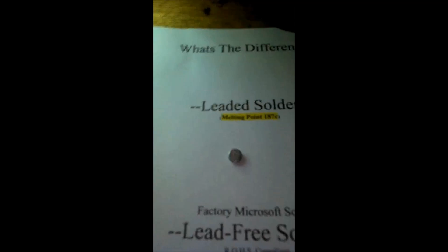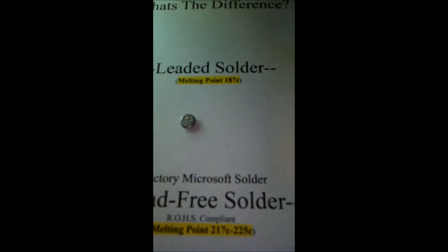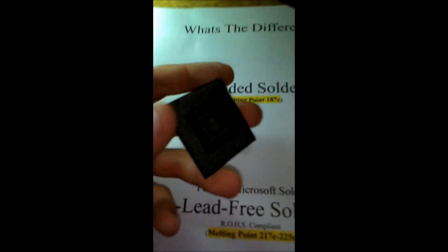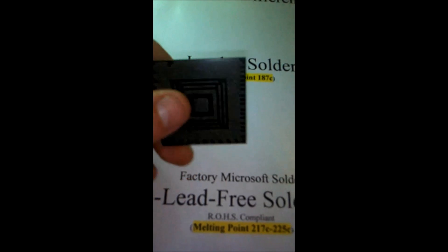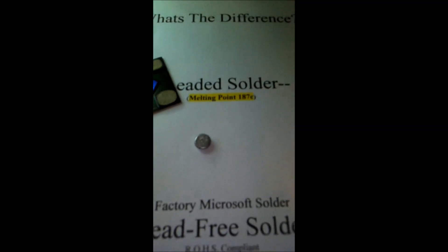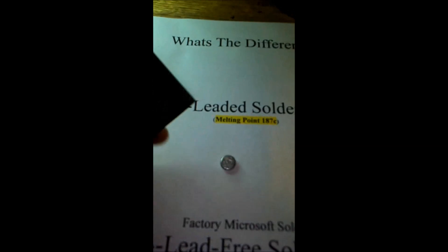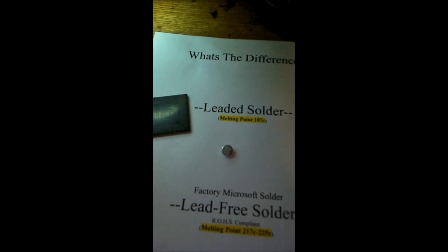What problems does this cause? The Red Ring of Death and the Yellow Light of Death on PlayStation systems are caused 99% of the time by what's called a ball grid array — an array of solder balls that connects the chip to the board using pads. One reason manufacturers use this is to save a lot of money compared to a socket-type CPU.